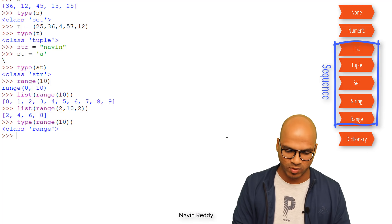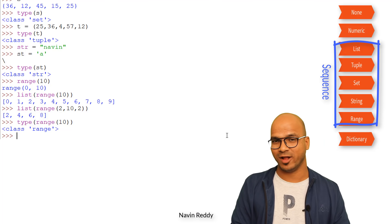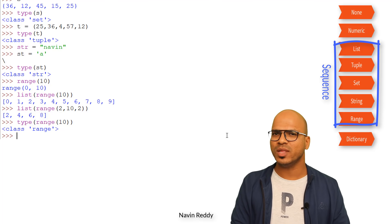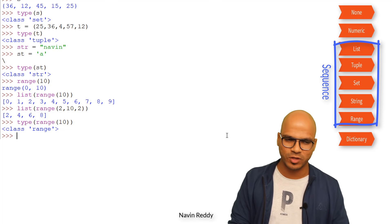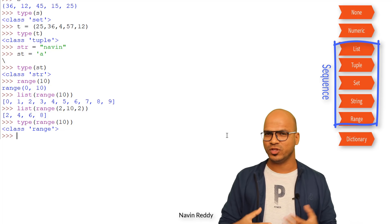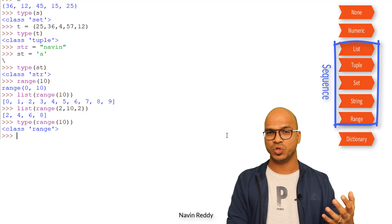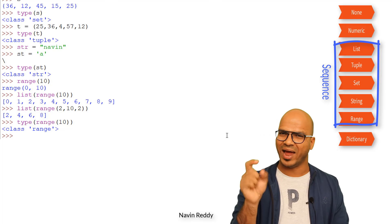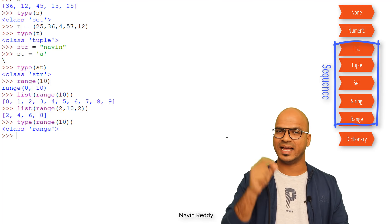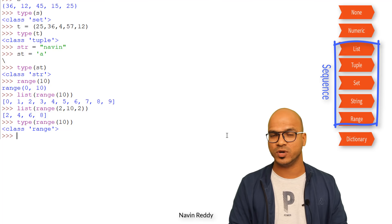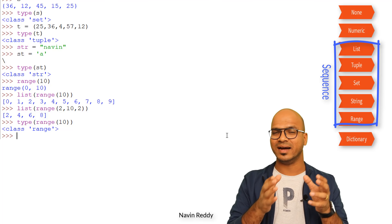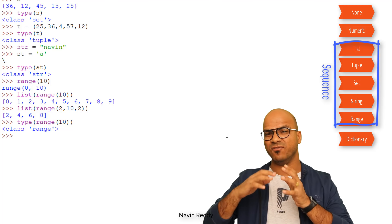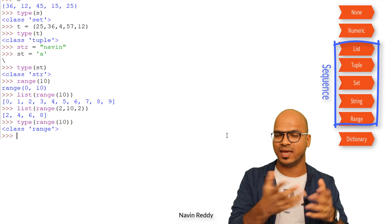Now we have one of the most exciting types — mapping, or dictionary. When you have a huge amount of data and want to fetch it efficiently, you can assign a key to every value. Normally in a list we assign index numbers, but in a dictionary for every value we assign a key.